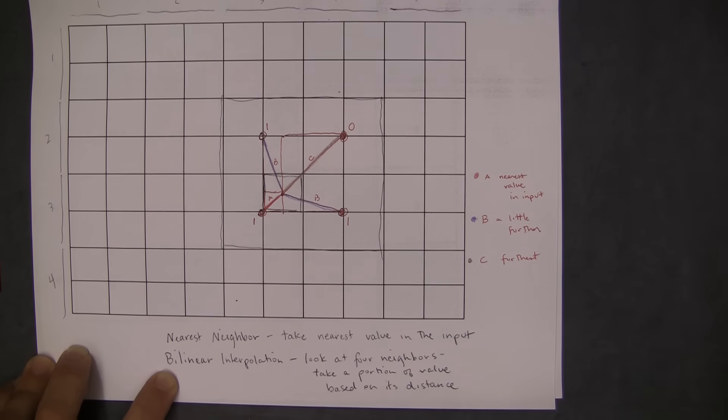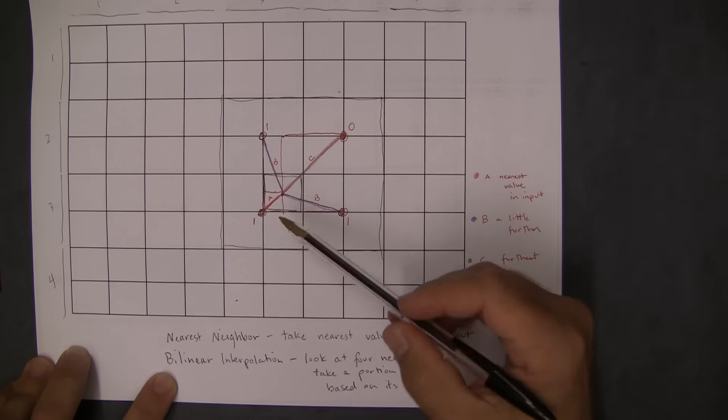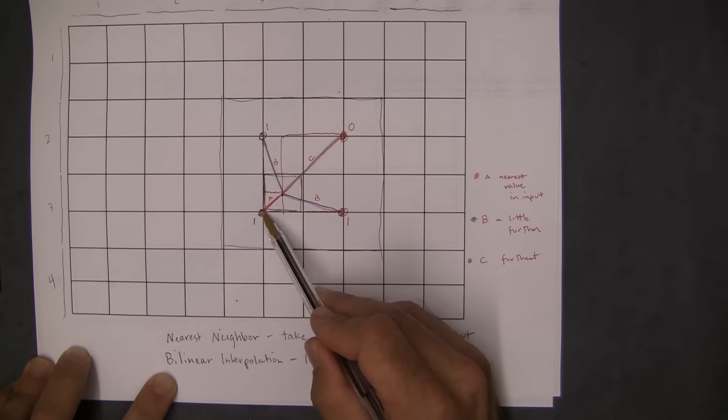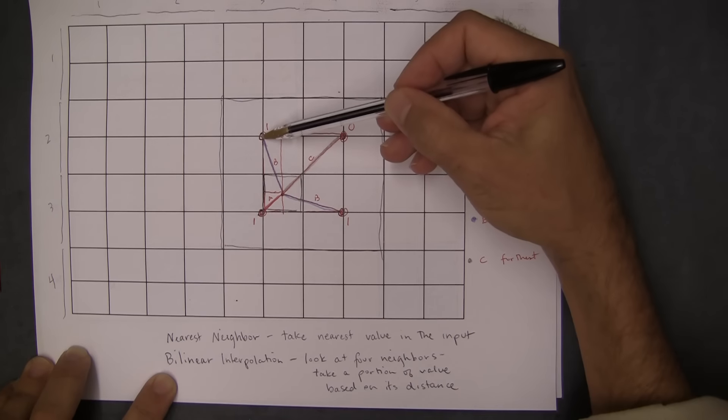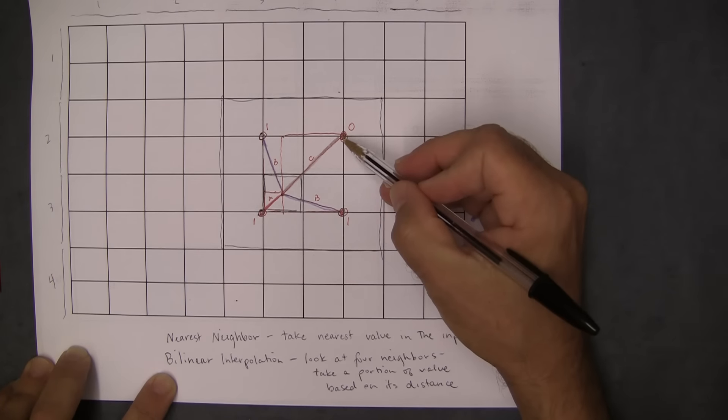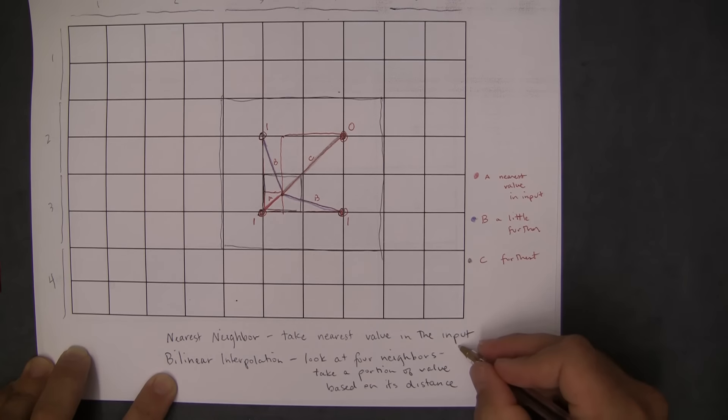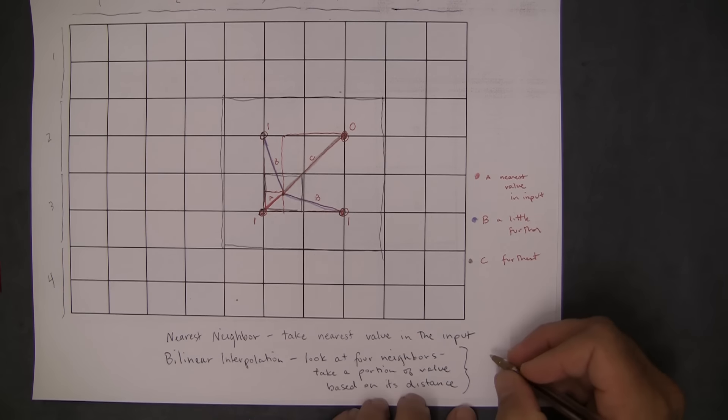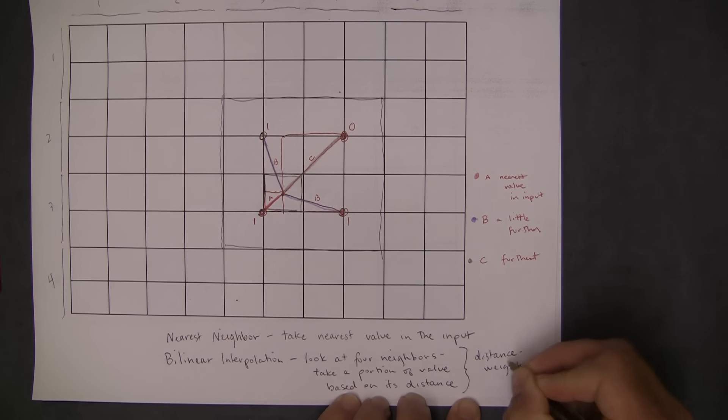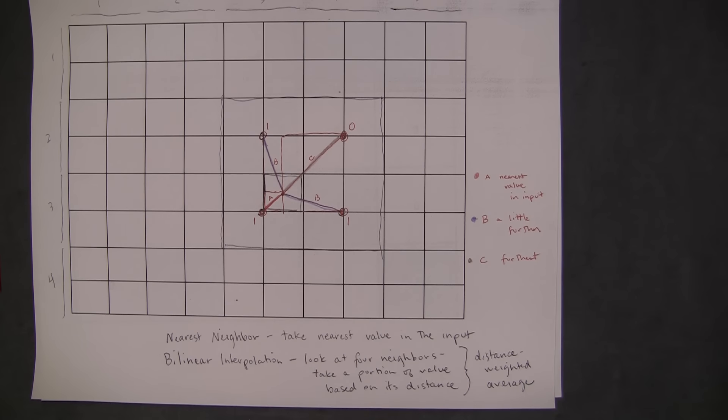So with bilinear, you would take more from this one. You take basically the most portion of this one, you would take a little bit less from these two, and you would take the least from this, but you would take some. So the idea is that this is a distance weighted average.